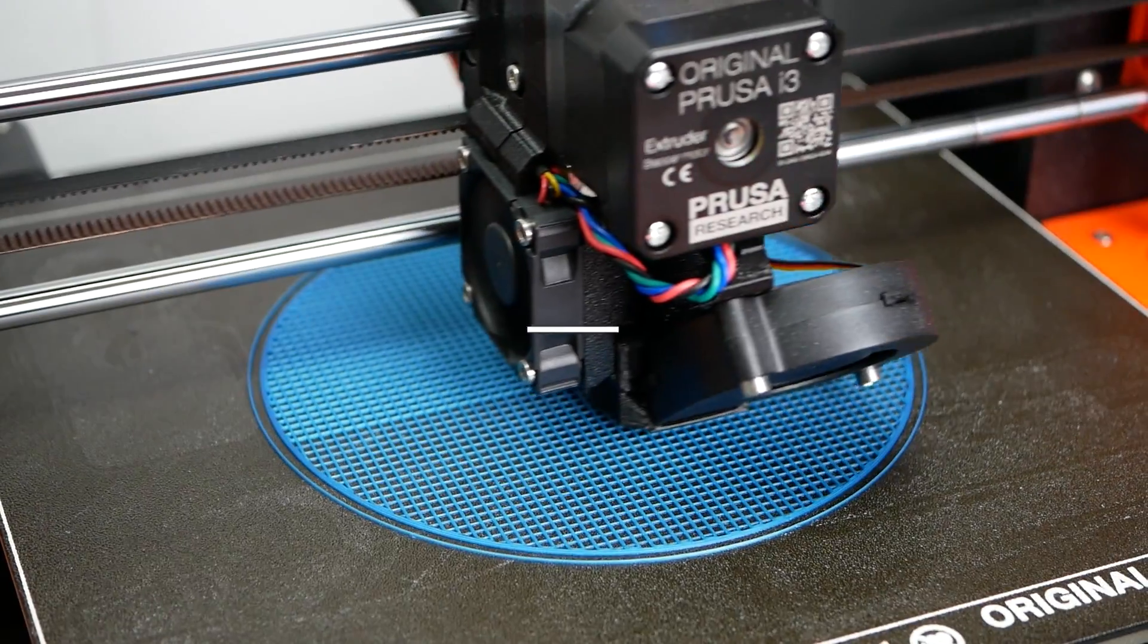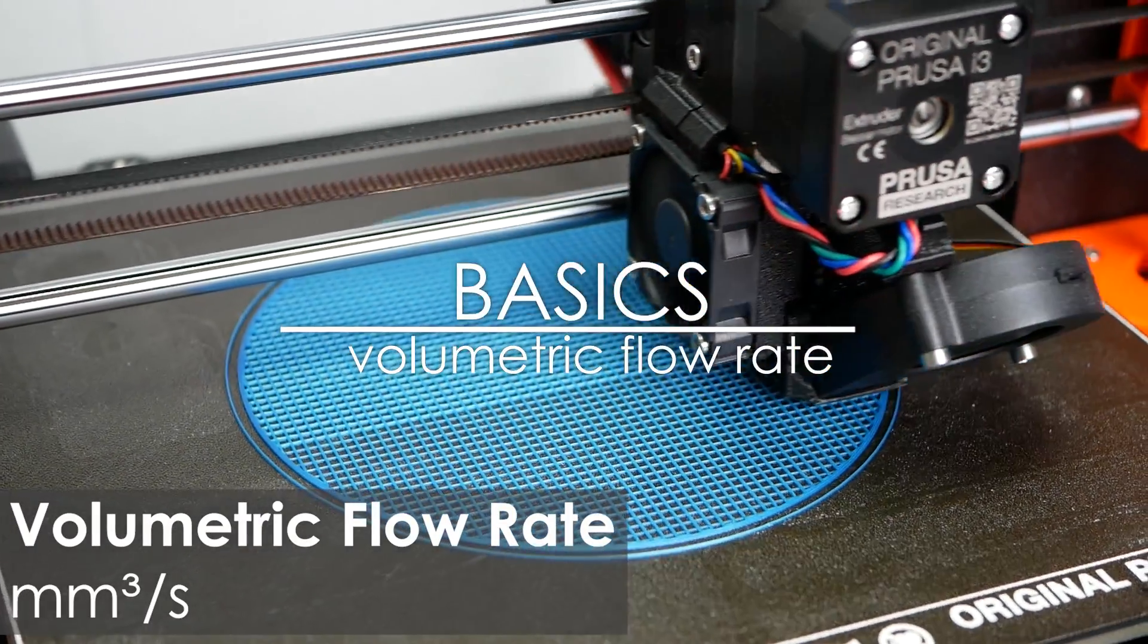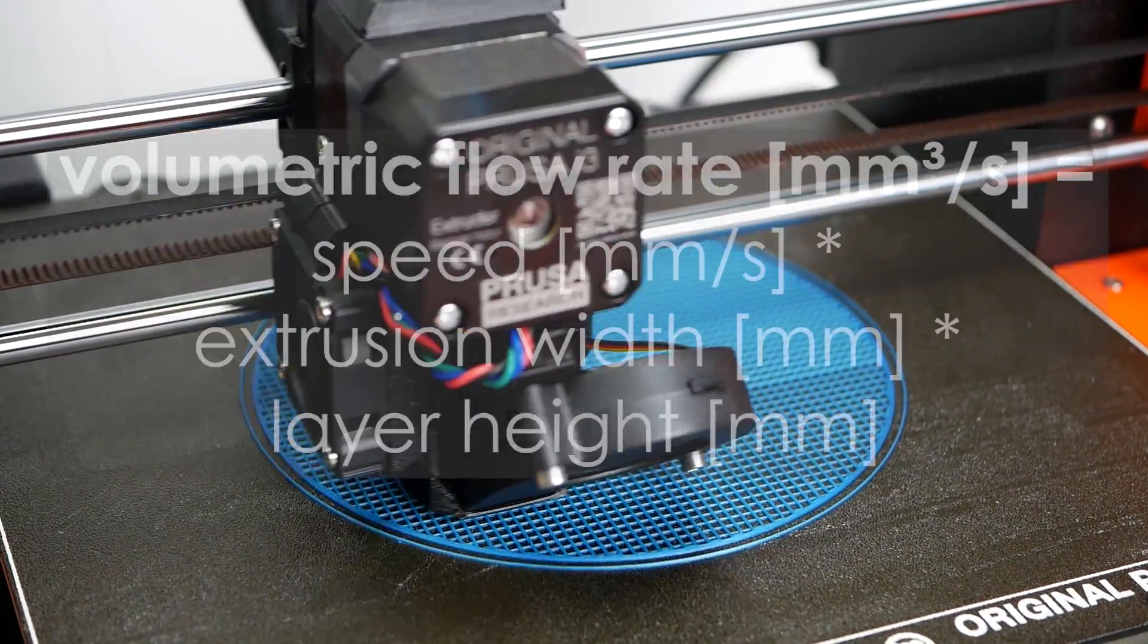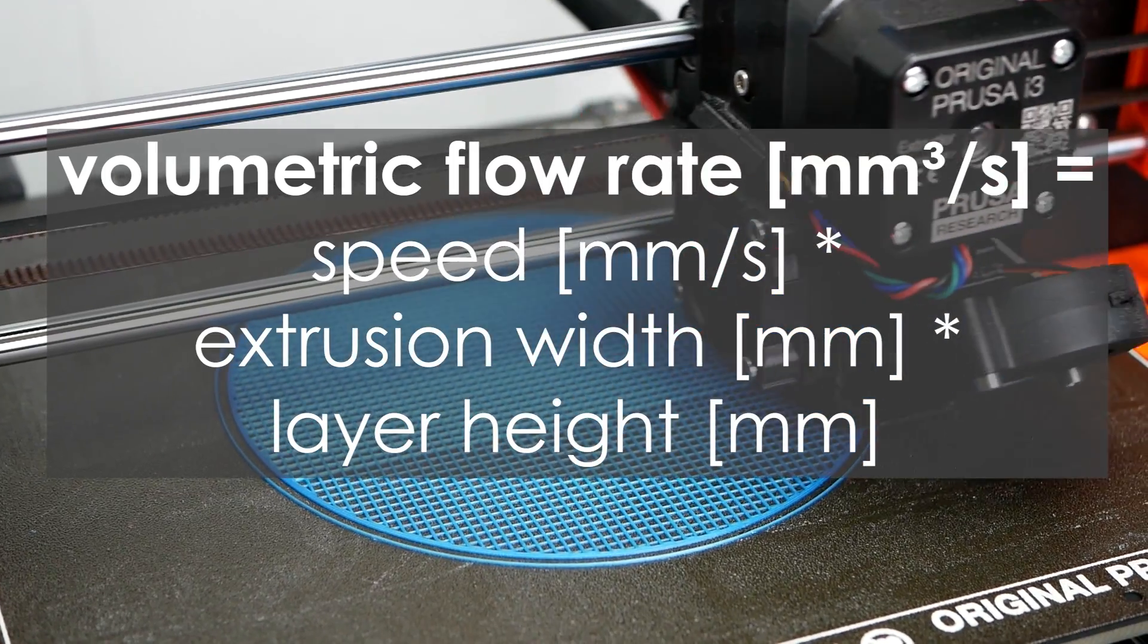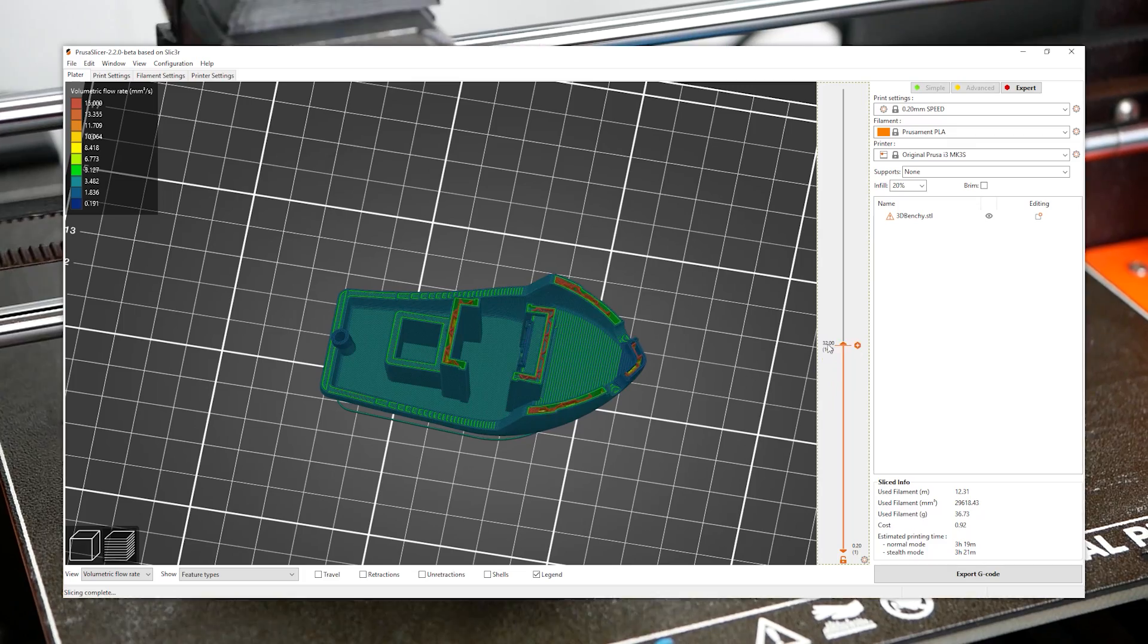The material throughput is usually characterized by the flow rate, so the amount of material that is pushed through the extruder per second. This property is linearly proportional to the printing speed, nozzle diameter, and layer height and can be visualized for example in Prusa Slicer.